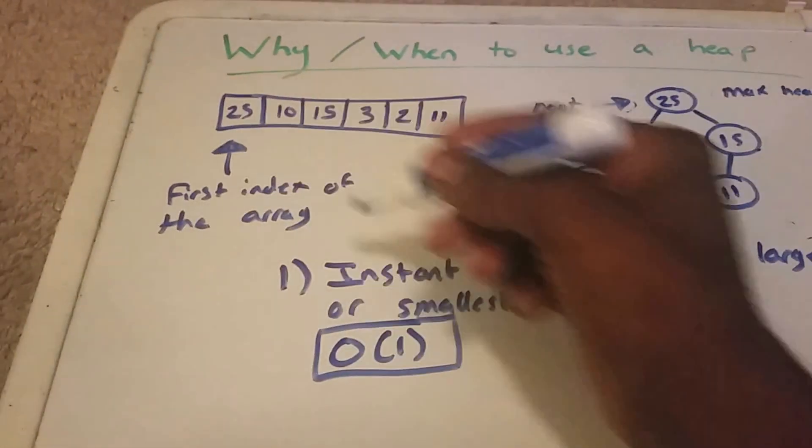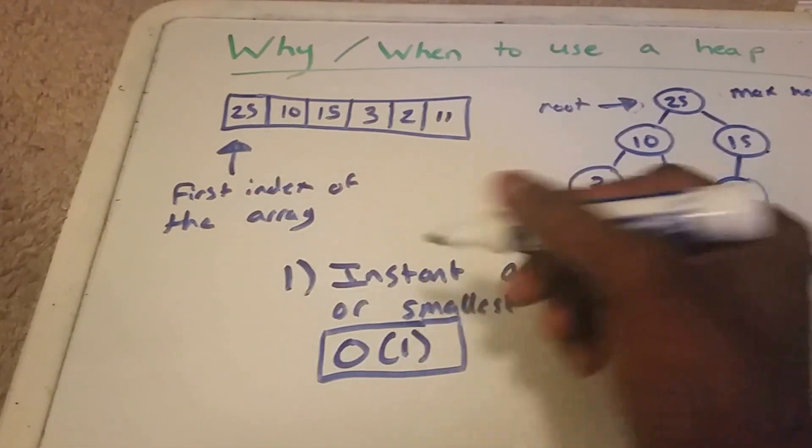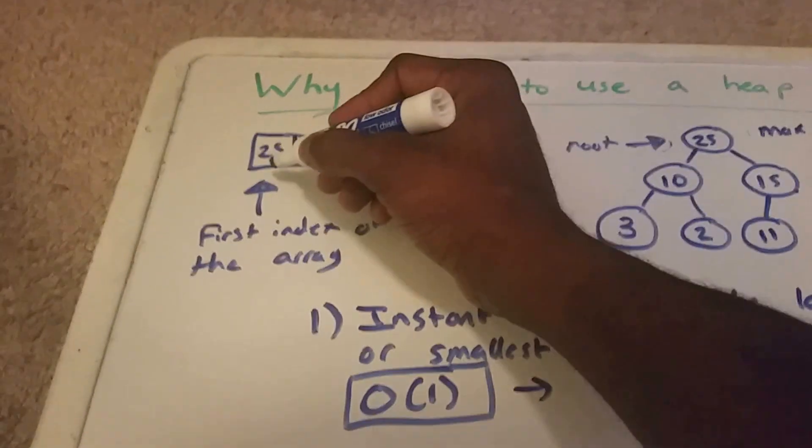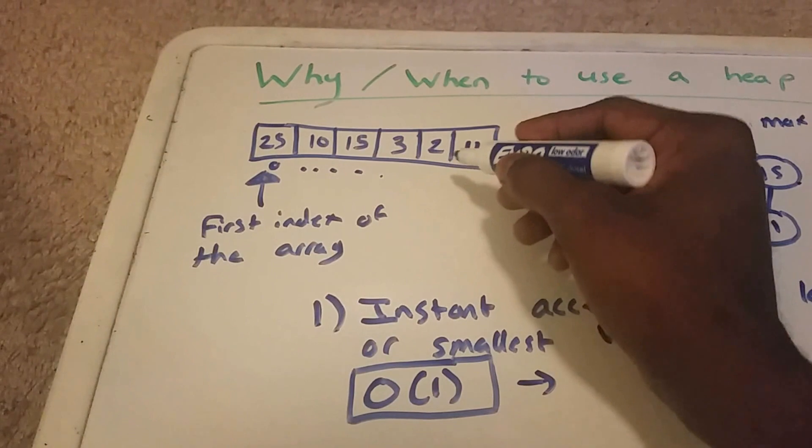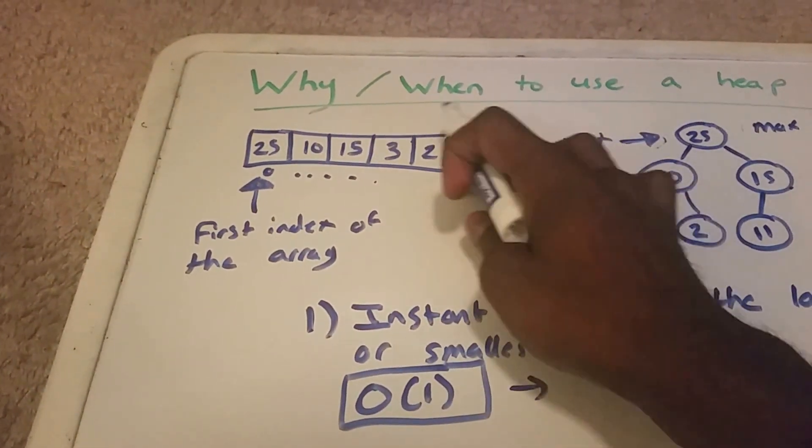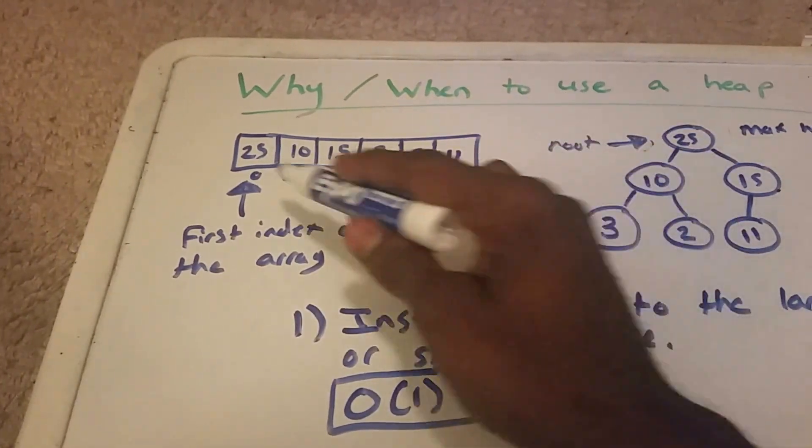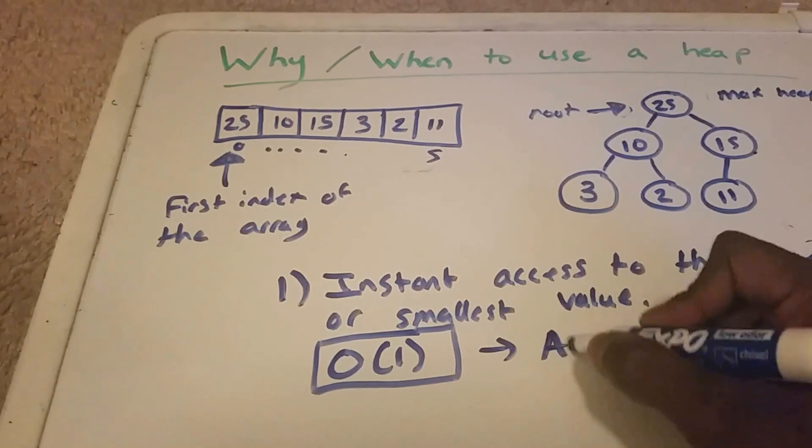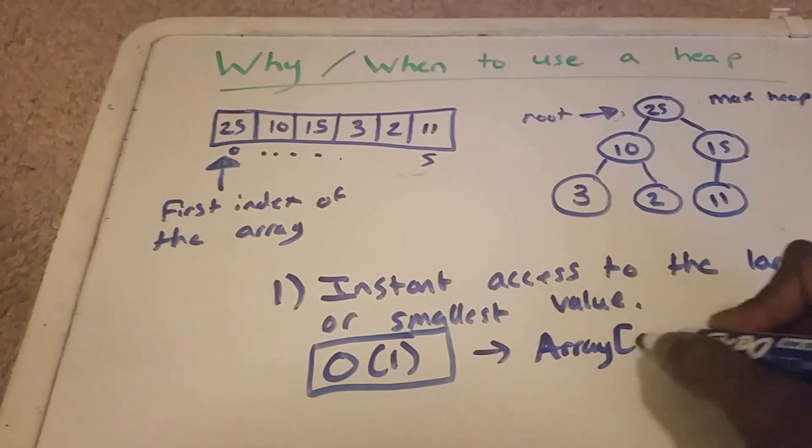All we have to do is return the array at the starting position. So if we started the array from 0 to, let's see, 1, 2, 3, 4, 5, 6. So this would be 5 here, 0, 1, 2, 3, 4, 5. Then we just return array at position 0.